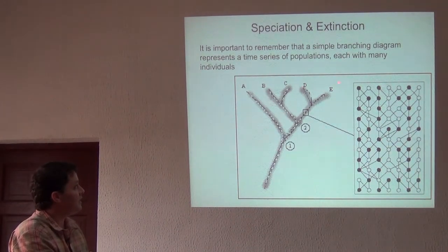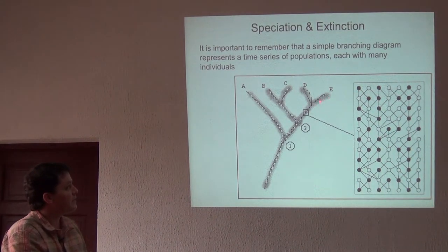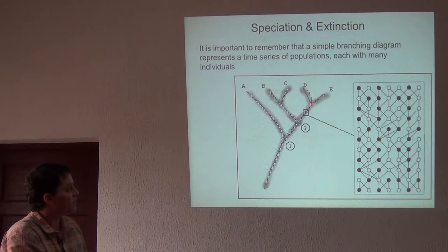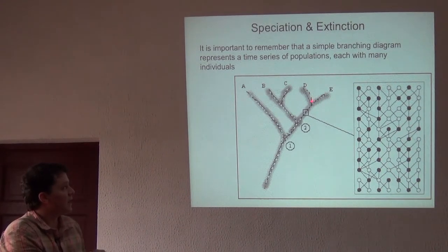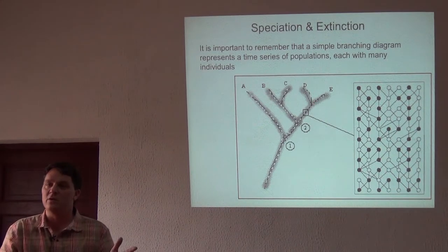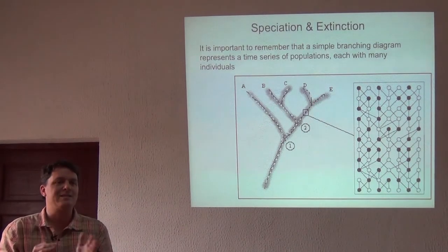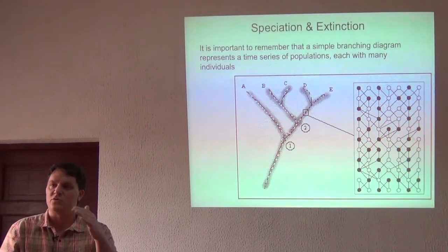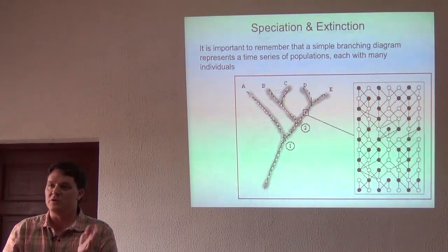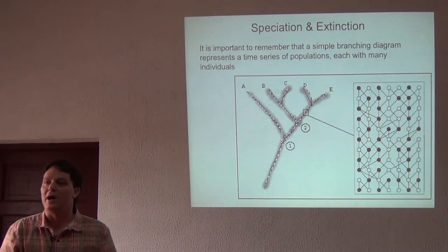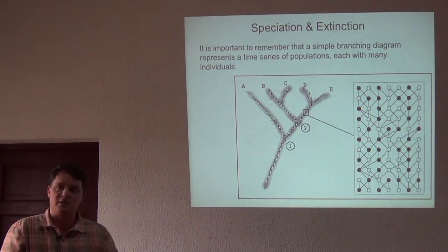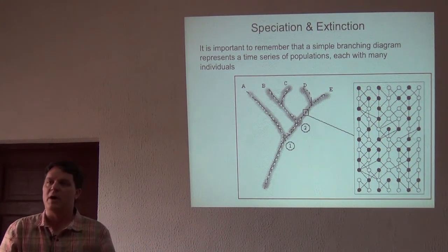So D and E are separate species because each of them has a whole population contained within that branch, and they're distinct from each other because at this point they became distinct and stopped sharing genetic material and became distinct and separate — a series of ancestral-descendant populations that are distinct from each other and cohesive through time.